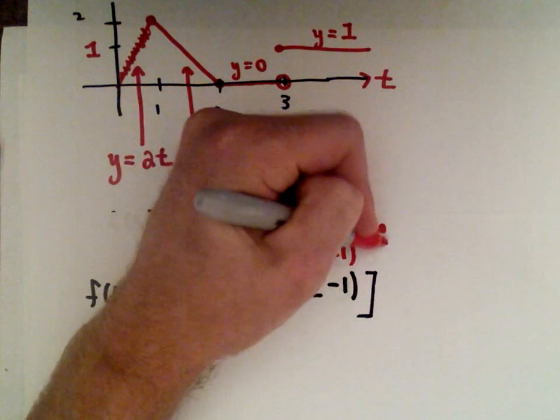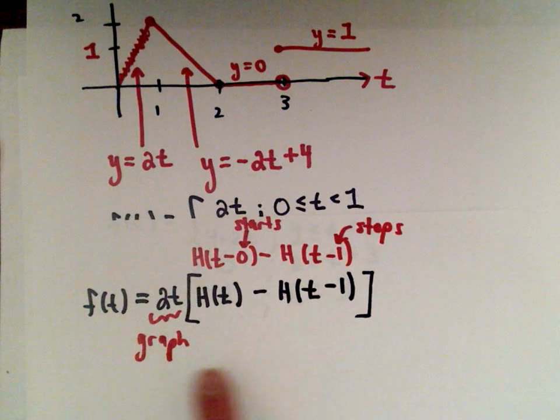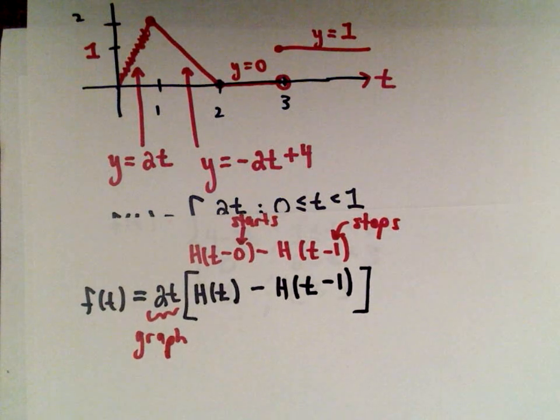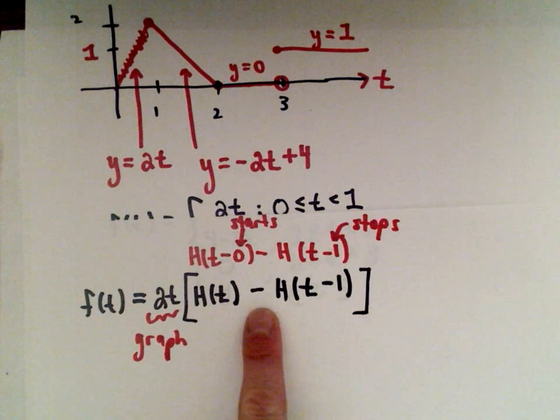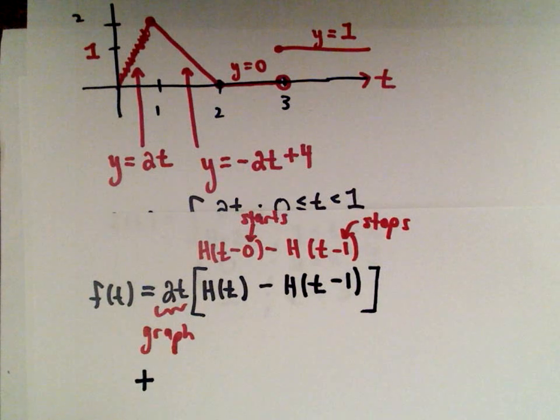So I could have written h of t as h of t minus 0. And then we have this h of t minus 1, so basically the graph starts at 0, it stops at t equals 1. So that would be the first part of our expression here, so 2t multiplied by h of t minus h of t minus 1. And I'm going to run out of room, but I'm just going to just put a plus here because again this is all one big function.